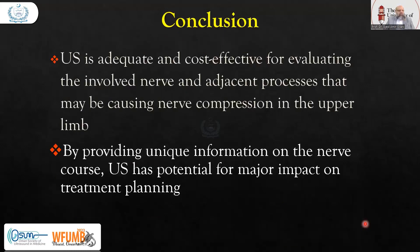In conclusion, ultrasound is adequate and cost-effective for evaluating the involved nerve and adjacent processes that may be causing nerve compression in the upper limb. By providing unique information on the nerve, ultrasound has the potential for major impact on treatment planning.